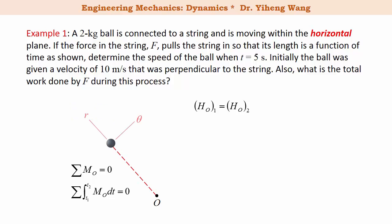Setting up a polar coordinate system, at any given time the velocity of the ball has a radial component vr and a transverse component v_theta. The radial velocity always has a line of action passing through point O, so vr creates no angular momentum about O — only v_theta does. Therefore the conservation of angular momentum equation gives R1·m·v1 = R2·m·v_theta2. The mass cancels out, and R1 and R2 are the moment arms as well as the string lengths determined from the given function.